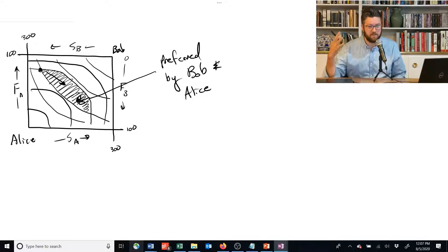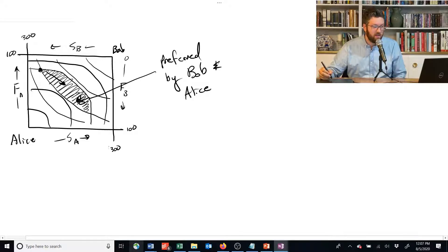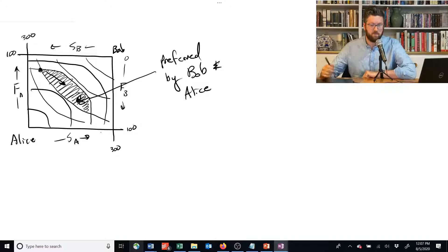And we can see by the same kind of argument that there's always going to be this region if those two indifference curves are cutting each other. If they're both on indifference curves that are cutting each other, there's going to be some little region that they can improve, that they can move into.